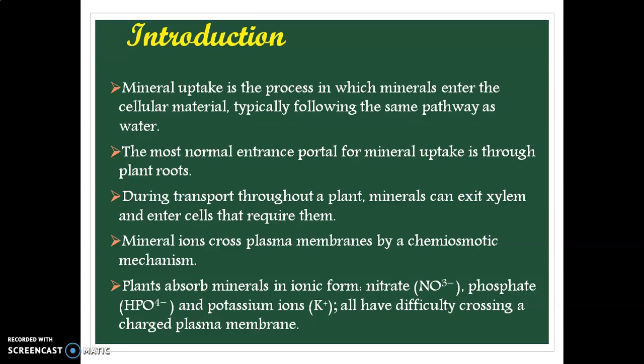Nitrogen is absorbed in the form of nitrate or nitrite ions. Phosphate and potassium are also absorbed in the form of their respective ions. These ions carry a charge on them, so there is difficulty in crossing the plasma membrane because they are charged elements. Therefore, there are various mechanisms for the uptake of these mineral ions through roots or by the plant.